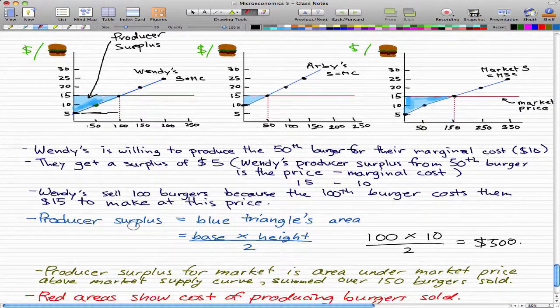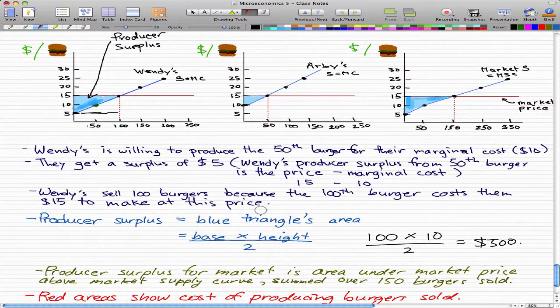And that's not too difficult. So the producer surplus for the market is the area under the market price and above the supply curve. Summed over 150 burgers.